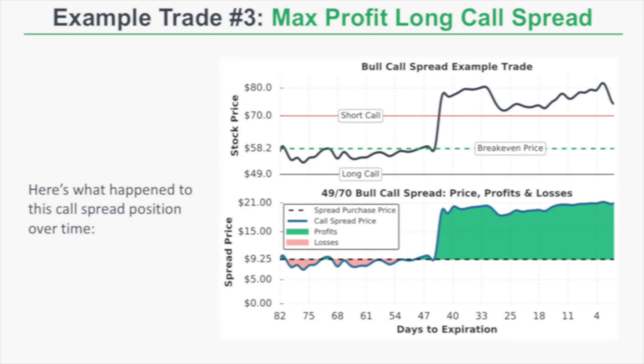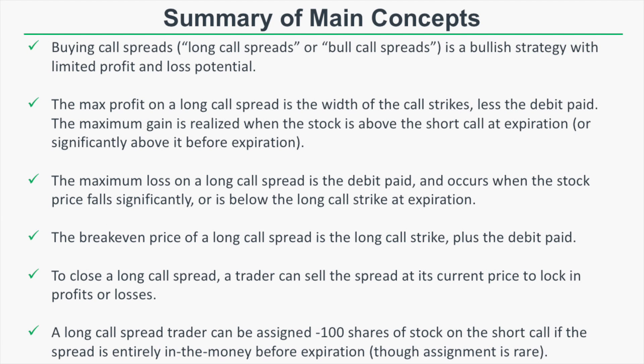To recap: buying call spreads is also called long call spreads, bull call spreads, or debit call spreads — all the same thing. A bull call spread is a bullish strategy with limited profit potential and limited loss potential, making it a relatively conservative strategy, especially with narrow spreads. The maximum profit potential is the width of the call strikes less the debit paid, and the maximum gain is realized when the stock price is above the short call strike at expiration — or if the stock jumps significantly above the call spread before expiration. The maximum loss is the debit paid, occurring when the stock price falls below the long call strike.